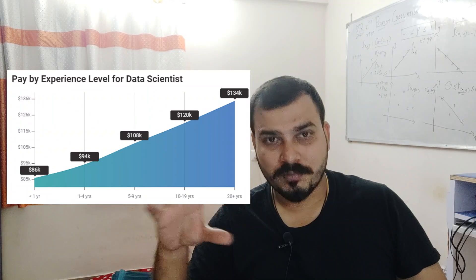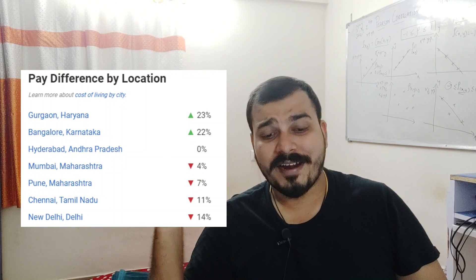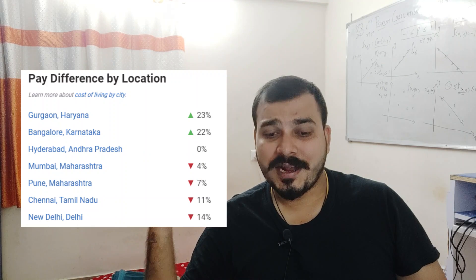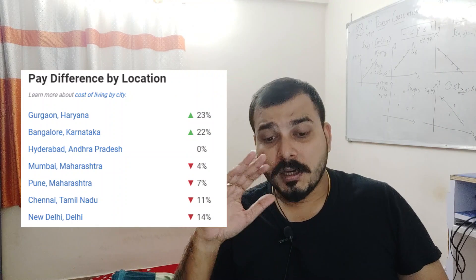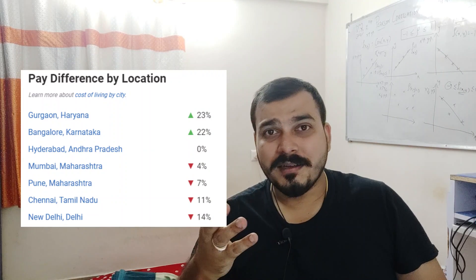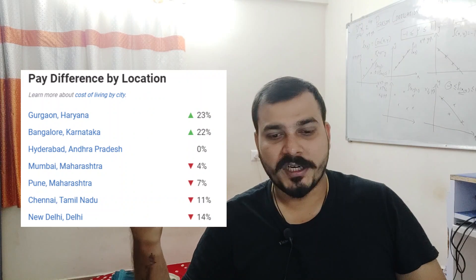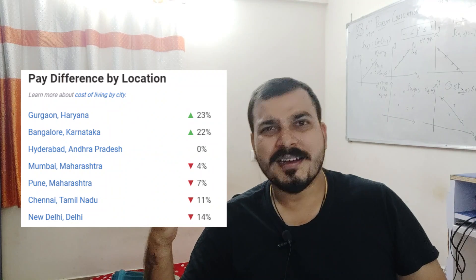Regarding pay difference by location for a data scientist in India: in Gurgaon and Bangalore, based on the cost of living, the salary is quite high — around 23% above the base salary in Gurgaon and more than 22% above in Bangalore. In some other cities like Mumbai and Pune, it is a little bit less.